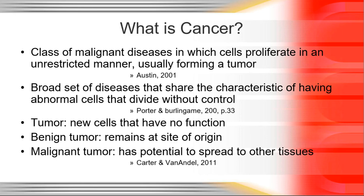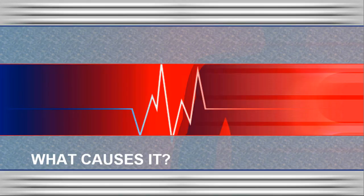A benign tumor remains where it forms. It doesn't mean that benign tumors can't cause problems, but really the key to a malignant tumor is that it can spread to other tissues. Little pieces will break off and establish themselves at a new site.